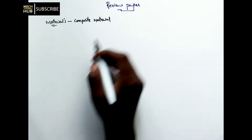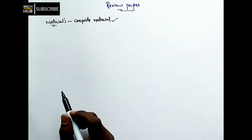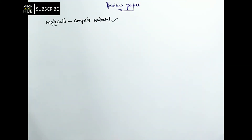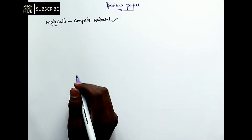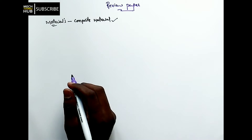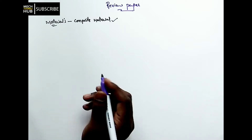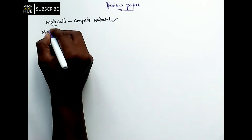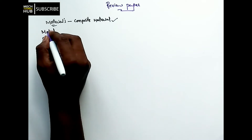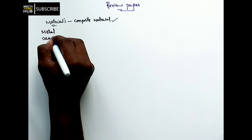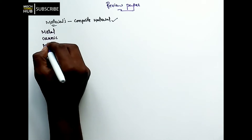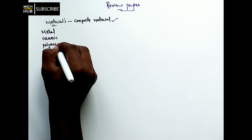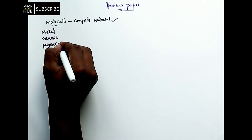If your area is composite materials, then as we discussed in our previous lecture, it is again divided — classified broadly into metal matrix, ceramic matrix, and polymer.